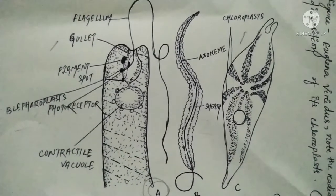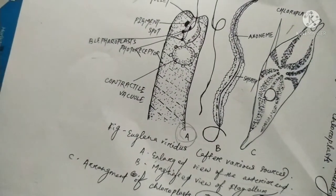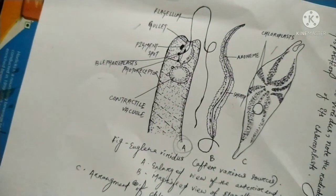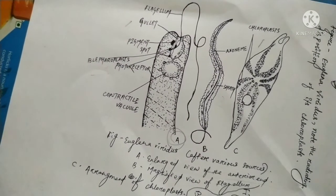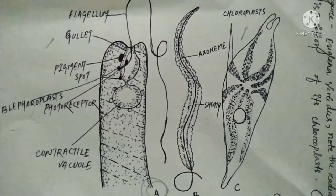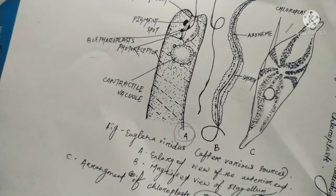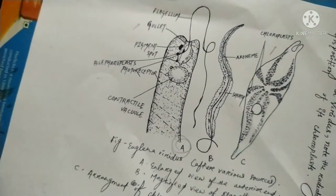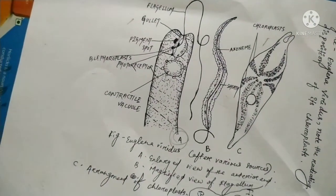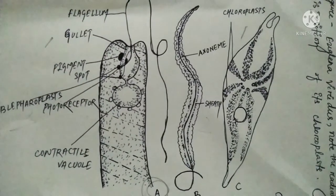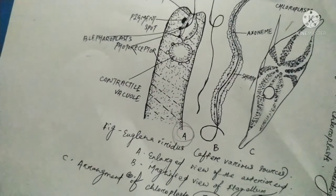These views show Euglena viridis from various sources. View A is an enlarged view of the anterior end, showing the flagellum, gullet, pigment spot, blepharoplast, photoreceptor, and contractile vacuole. View B is a magnified view of the flagellum, showing the axoneme. View C shows the arrangement of the chloroplasts.